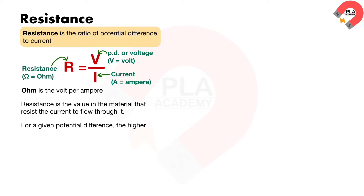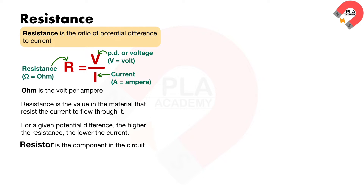For a given potential difference, the higher the resistance, the lower the current. The resistor is the component in the circuit that is used to control the current.